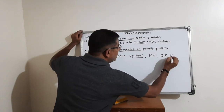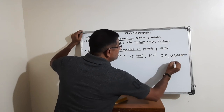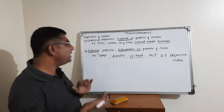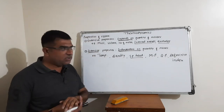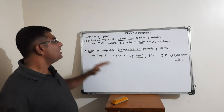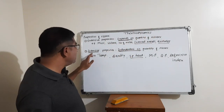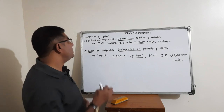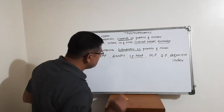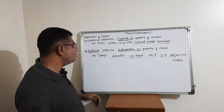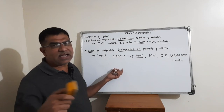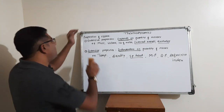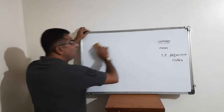Another example of an intensive property is refractive index. To summarize: thermodynamic properties are of two types — extensive properties, which depend on quantity of matter, and intensive properties, which are independent of quantity of matter. Students should be able to identify from a list which properties are intensive and which are extensive.